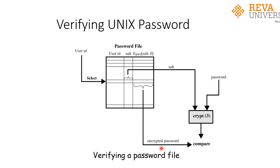In the diagram depicting UNIX password verification, the user ID is selected from the password file and its SALT value is retrieved. This SALT value and the entered password are given to the encryption routine, which generates an 11-character output sequence. This output is then compared with the stored encrypted password in the password file. If they match, the entered password is correct — that is how the password is verified.